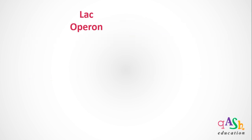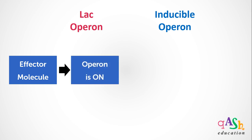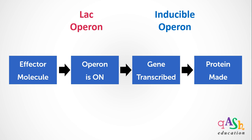The lac operon is an inducible type of operon. An inducible type of operon requires an effector molecule. In the presence of such an effector molecule, the lac operon will be switched on, and therefore genes present on the lac operon will be transcribed and translated into their respective proteins. Because the presence of the effector molecule induces the operon to transcribe its genes, the effector molecule is called an inducer.